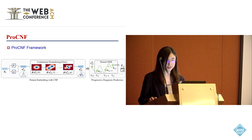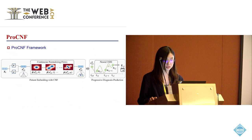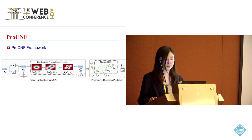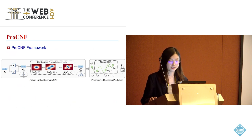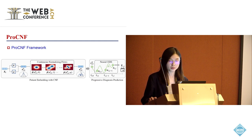Specifically, we first leverage CNF to transform a patient from a simple base distribution, for example Gaussian, into a more complex patient-specific distribution via a series of invertible mappings, when the base distribution is reparametrizable.